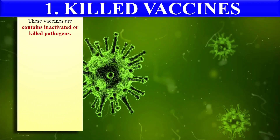Killed vaccines, as the name indicates, they contain the killed form or inactivated form of the pathogen. As the pathogen is in the inactivated state, it will not be able to cause the disease inside the host. But the host body will recognize this inactivated pathogen as a foreign particle, generate an immune response, and make antibodies which will also serve as memory antibodies. In that way, the host will develop immunity against these killed vaccines.